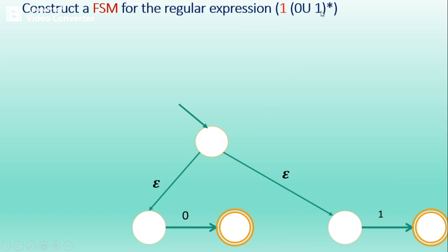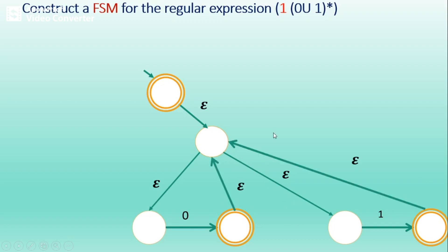Now we construct (0 union 1) star, since once the union is complete, the next precedence operator is star. To build the Kleene star: create a new start state and make it an accepting state as well — shown as double-circled. Connect the new start state to the earlier start state using an epsilon transition. Then join the existing accepting state back to the earlier start state using an epsilon transition. This gives us the FSM for (0 union 1) star.